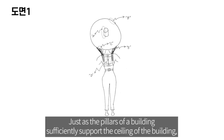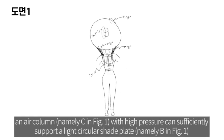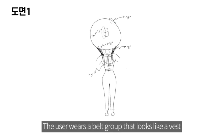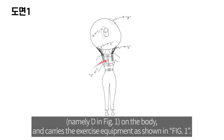Just as the pillars of a building sufficiently support the ceiling of the building, an air column, namely C in Figure 1, with high pressure can sufficiently support a light circular shade plate, namely B in Figure 1. The user wears a belt group that looks like a vest, namely D in Figure 1, on the body and carries the exercise equipment as shown in Figure 1.